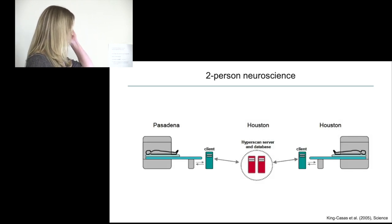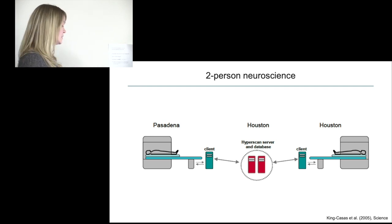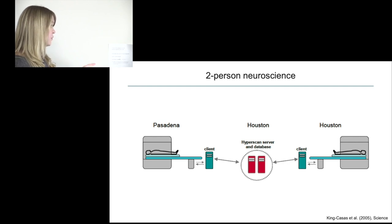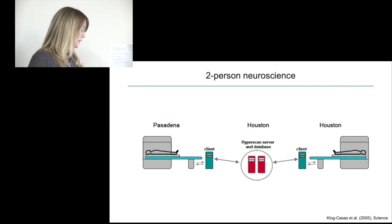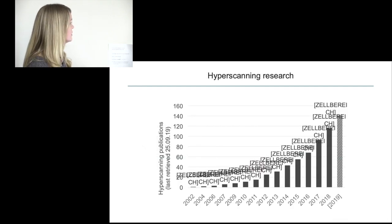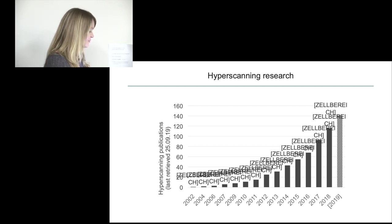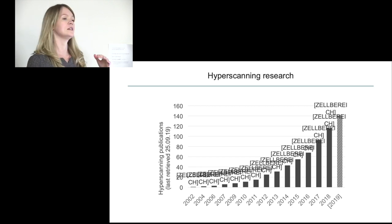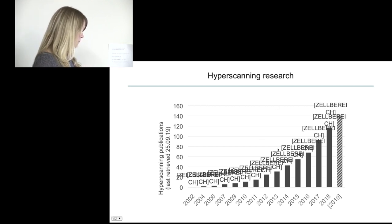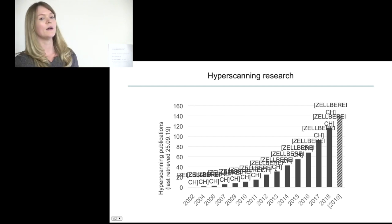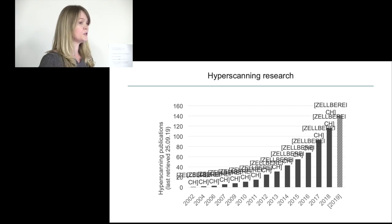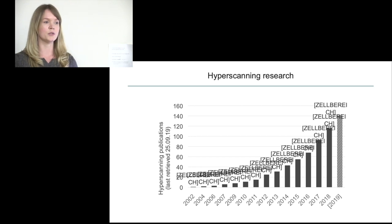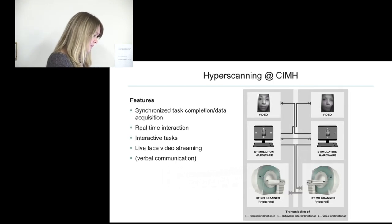A couple of brave people, first around the group of Reed Montague, tackled the problem of two-person neuroscience. In their first studies they used the internet to have people in different cities play games with each other, and they termed their method hyperscanning. The number of publications has increased enormously starting from around 2012–2013 — that's when we really picked up the method, became better in our experiments, and produced high-quality publications. Hyperscanning is super new, but this workshop shows we're learning really fast.